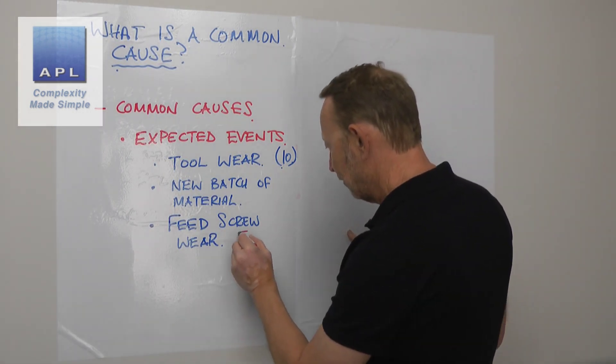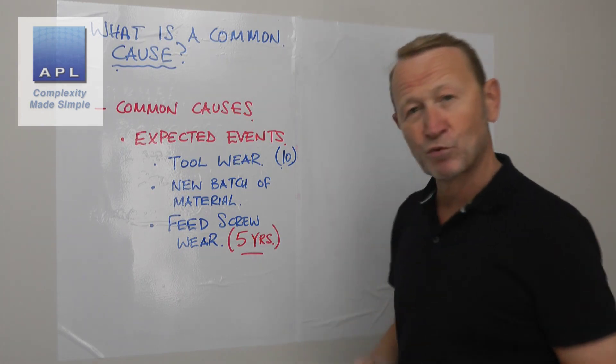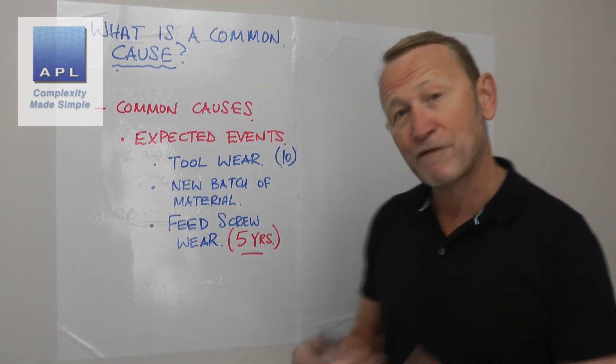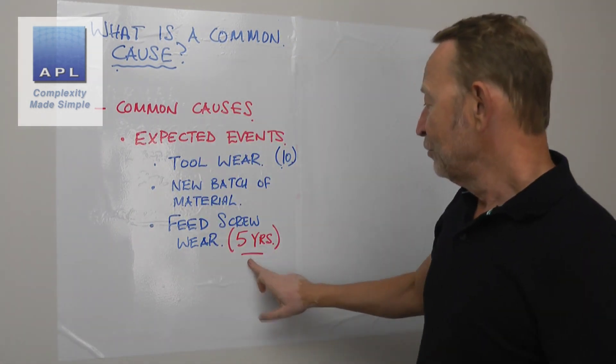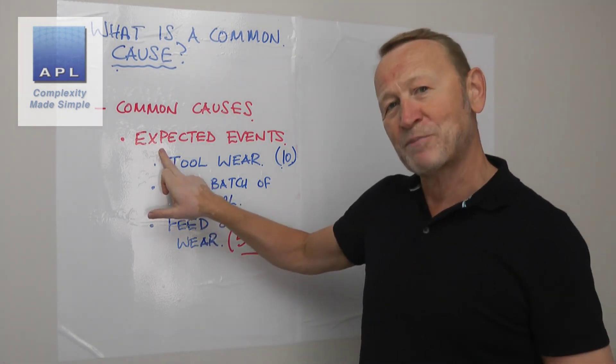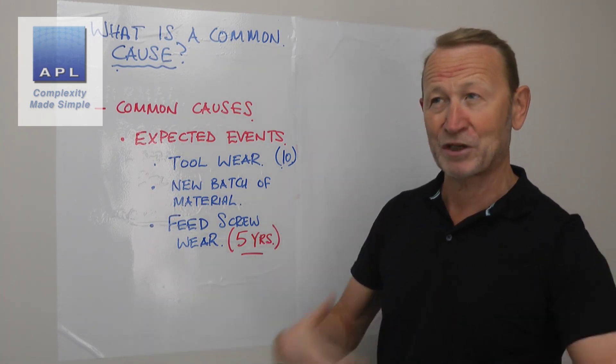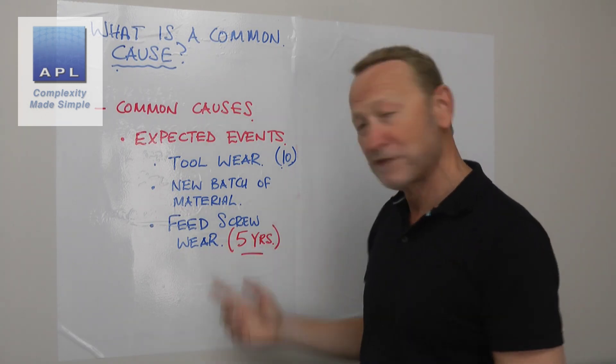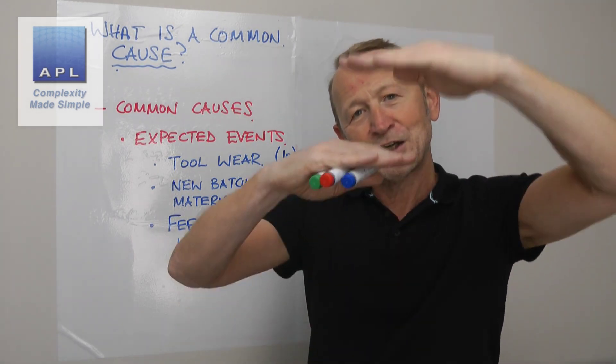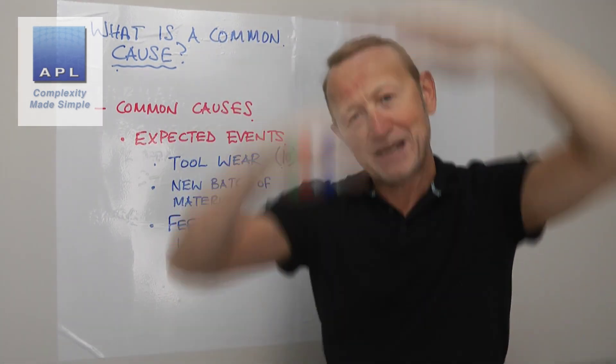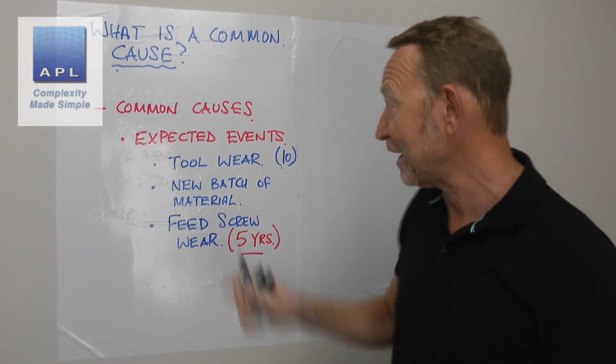So feed screw wear is an expected event. This might happen, by the way, over a period of let's say five years. It depends on how much work you're doing, how much volume you've got, how fast you produce an item, how complicated your items are, things like that. So this is happening over five years, but it's still an expected event. You can put rules in place - you could say we're going to check this every year, we're going to check this every six months, we're going to replace the feed screw every five years. You can put rules around this. Again, what are you doing? You're preventing the event from creating wild variability, you're controlling how much variability, how much of an effect this common event will have.